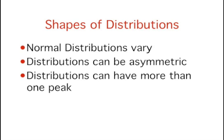Distributions have different shapes. They don't all look like the normal distribution. For example, the normal distribution is higher in the middle compared to its two tails. Other distributions need not have this feature. There is even variation among the distributions that we call normal. Distributions can also be asymmetric and or have more than one peak.